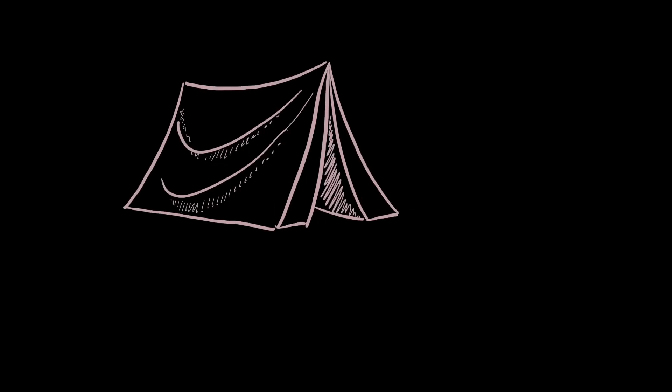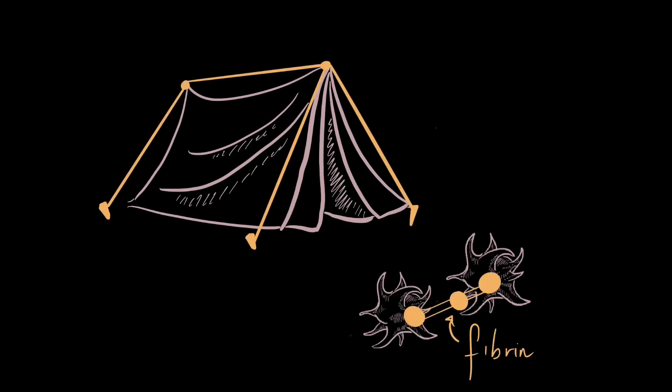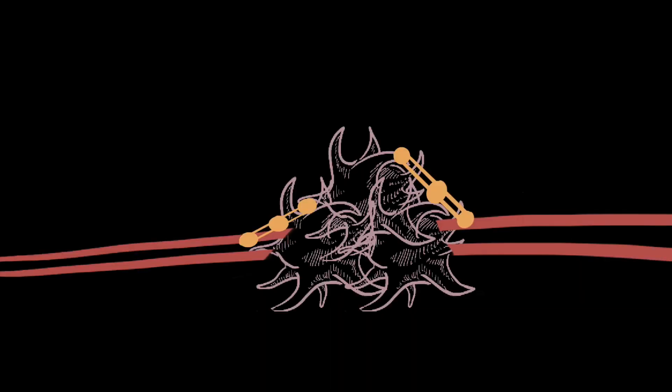But like a camping tent in a windstorm, this clot can be carried away by the fast flowing bloodstream unless it is strongly anchored down. This is where fibrin comes in. It produces a tight network that stabilizes the blood clot and stems the flow of blood.